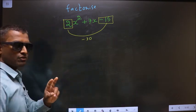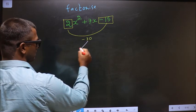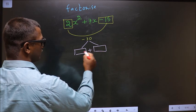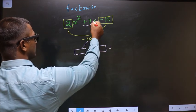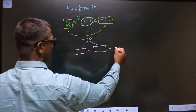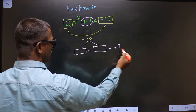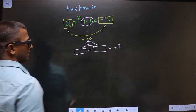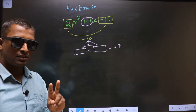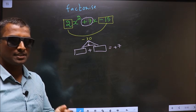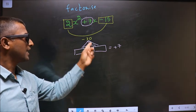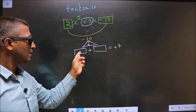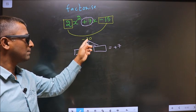Now you should look out for two numbers such that when you add the two numbers, you should get the middle coefficient which is plus 7. And also, when you multiply these two numbers, you should get minus 30.